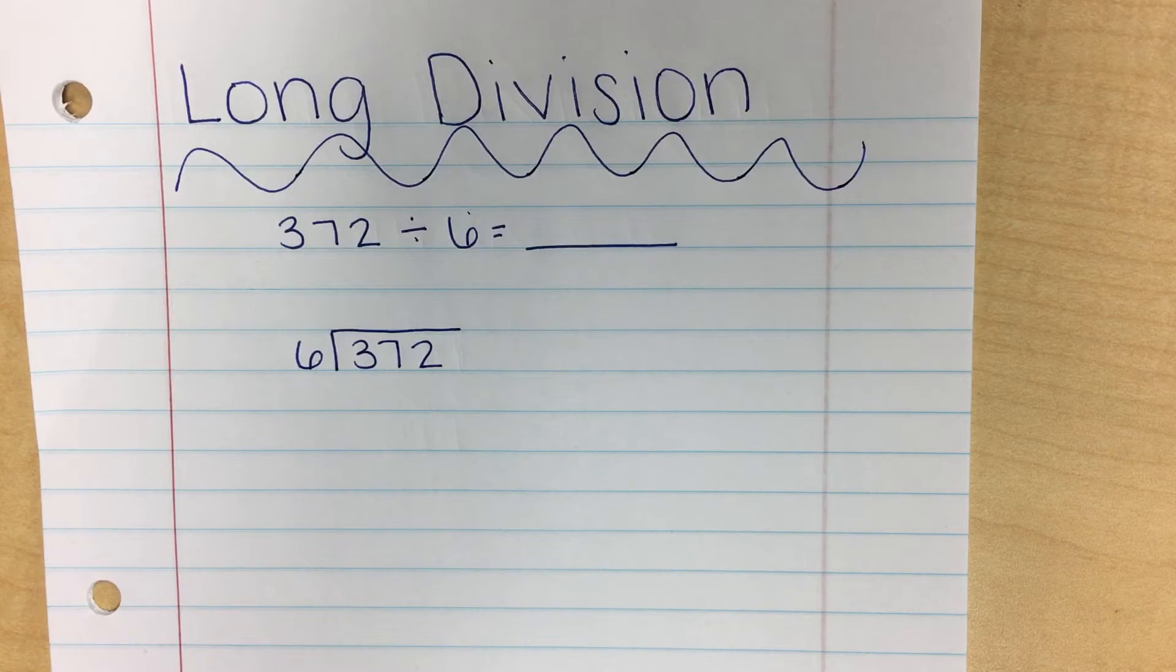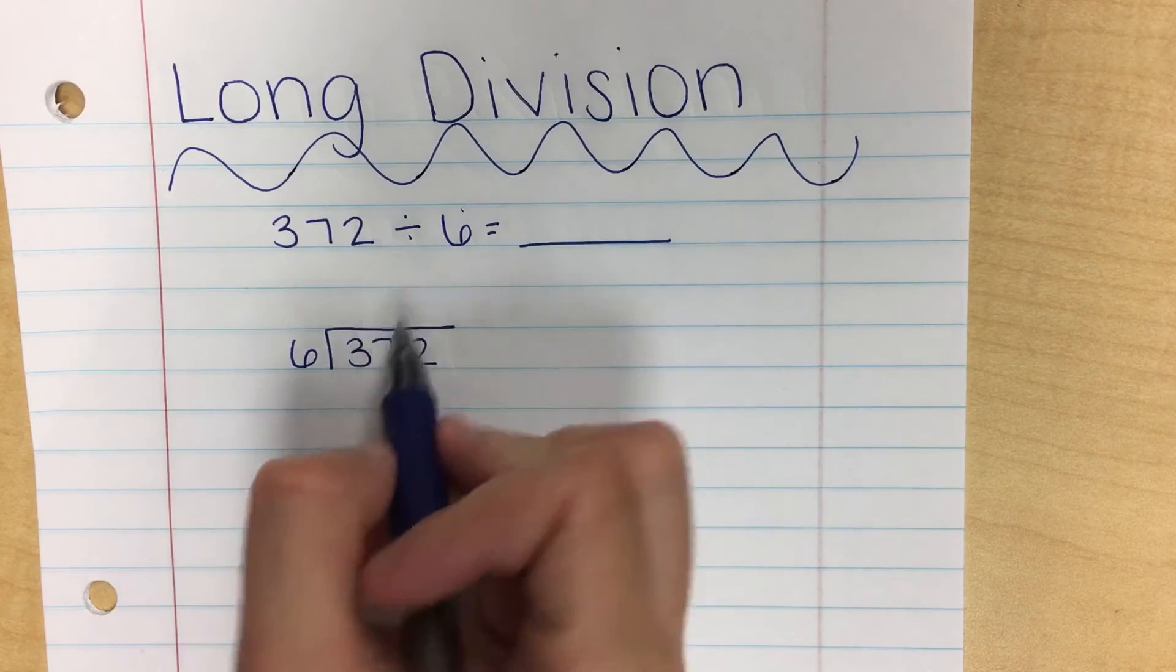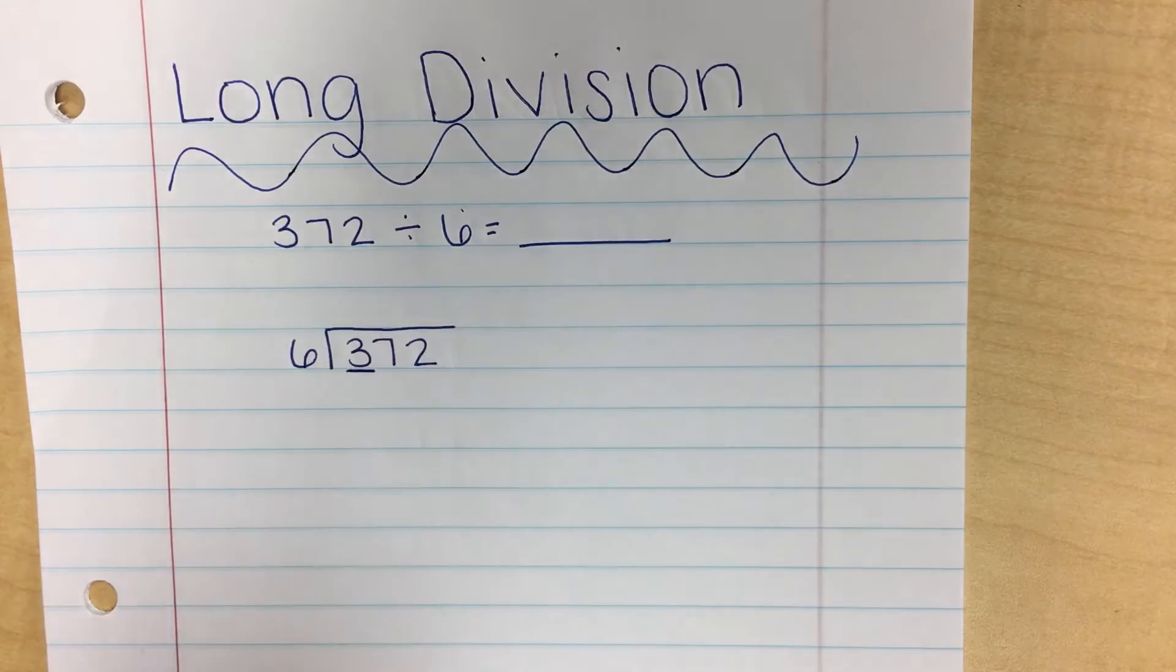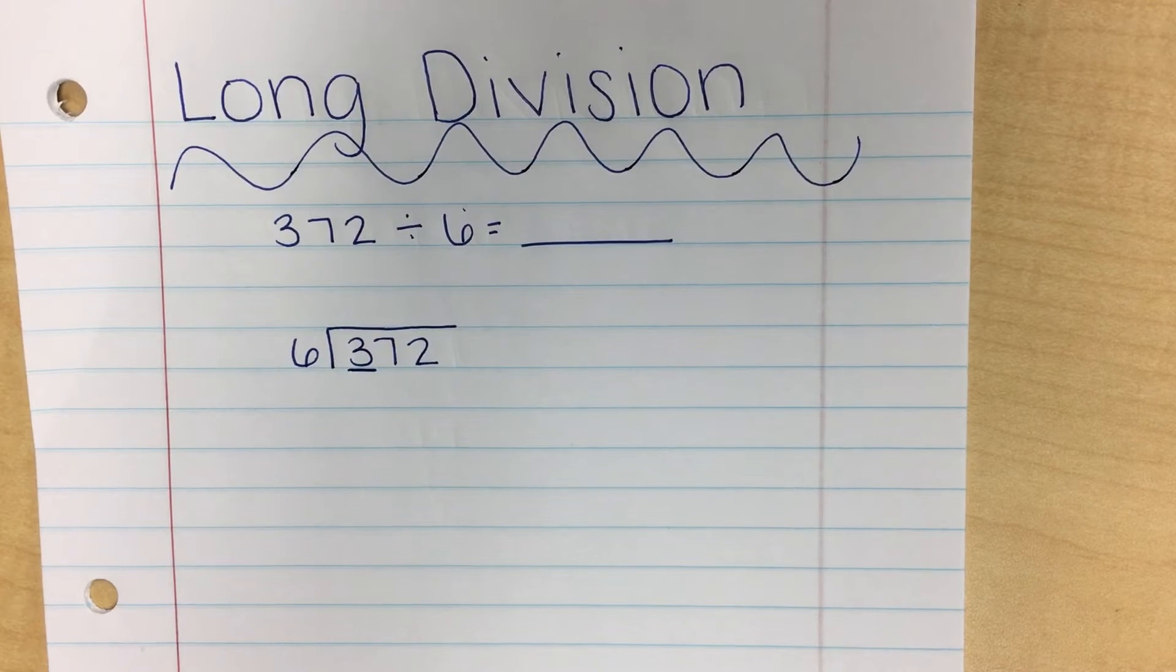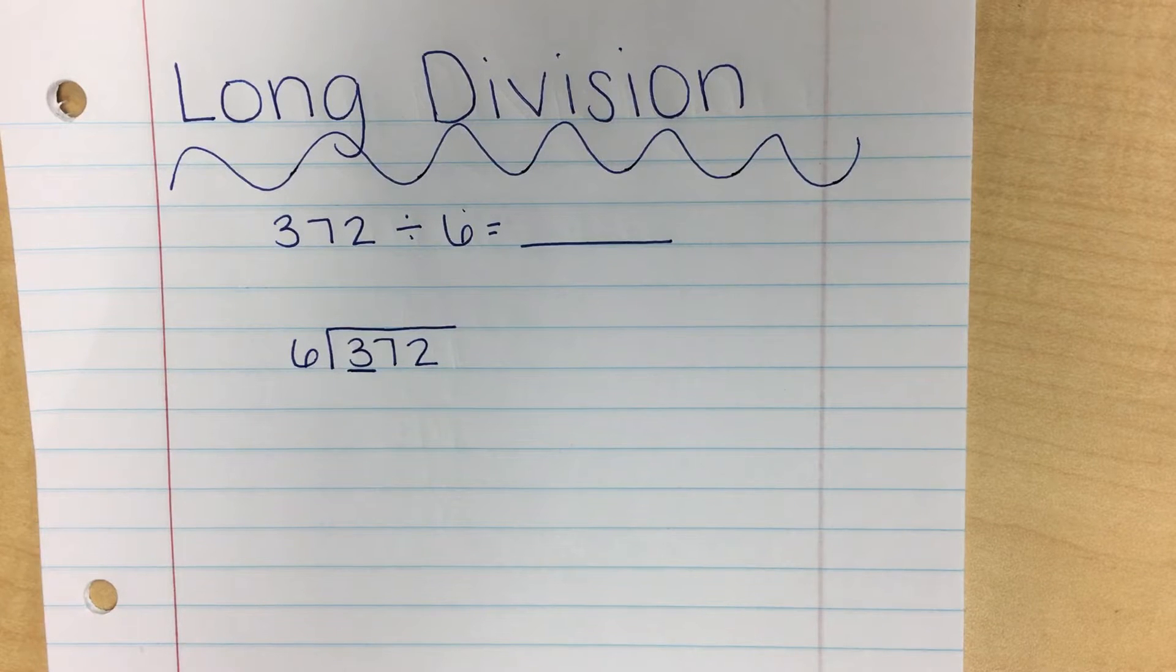So now we can start. The first step is to figure out how many times 6 can go into the first number that's there. The first number is 3. Can 6 go into 3? If you said no, you are correct. We know that 6 cannot go into 3, because 3 is smaller than 6.